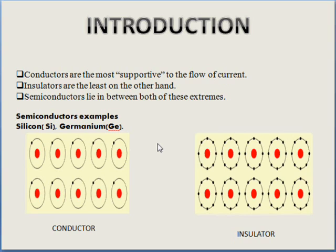In insulators, electrons are fixed and keep revolving. They are not free to move, which is why insulators do not conduct electricity while conductors do.